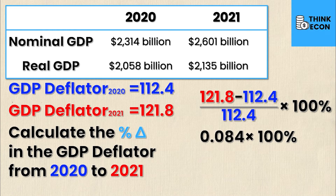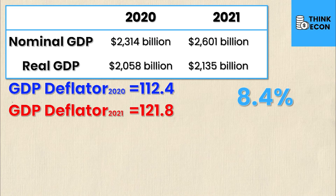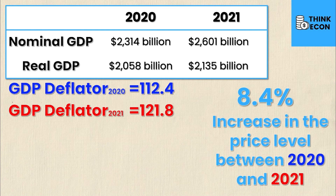Simplifying, we get 0.084 as a decimal, and multiplying by 100% gives us 8.4%. This 8.4% represents the increase in the price level between 2020 and 2021. So by calculating the GDP deflators for both years and then computing the percentage change, we get the increase or decrease in the price level.